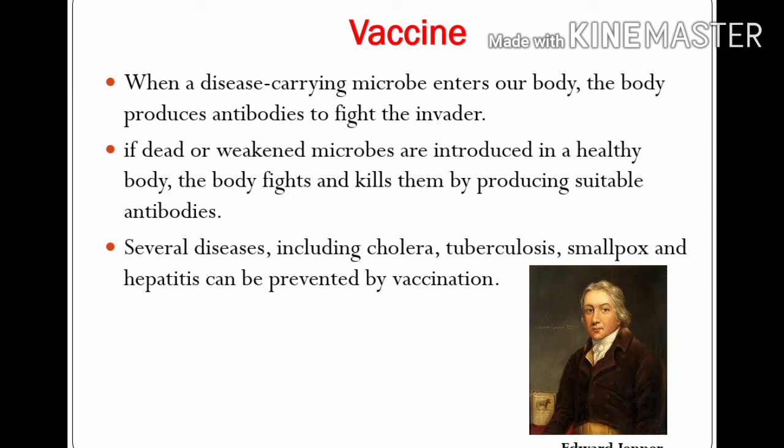You may have heard about vaccines. When a disease-carrying microbe enters our body, the body produces antibodies to fight the invader. If dead or weakened microbes are introduced into a healthy body, the body fights and kills them by producing suitable antibodies. These antibodies remain in the body and we are protected from the disease-causing microbes forever — this is how a vaccine works. Several diseases including cholera, tuberculosis, smallpox, and hepatitis can be prevented by vaccination. Polio drops given to children under the pulse polio program are actually a vaccine. Edward Jenner discovered the vaccine for smallpox in 1798.